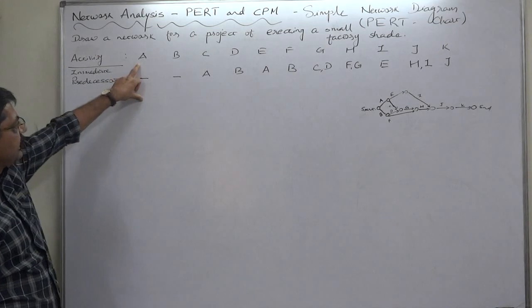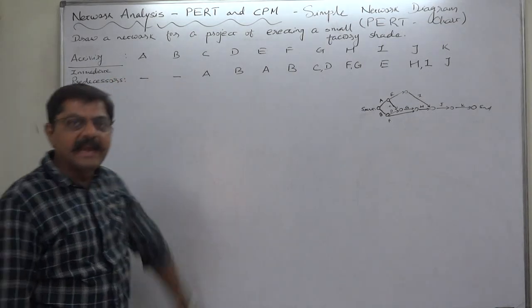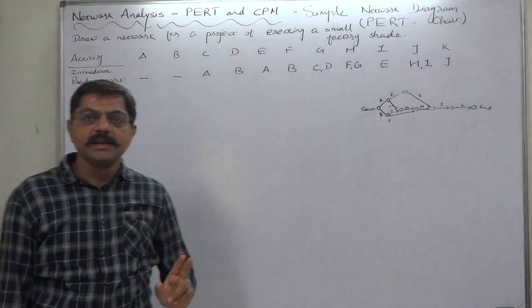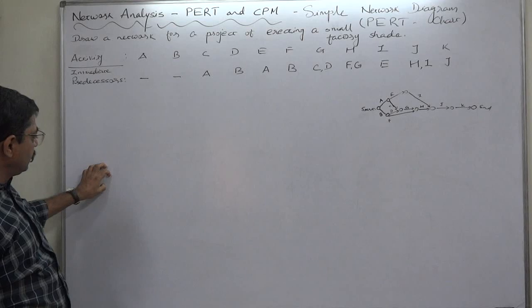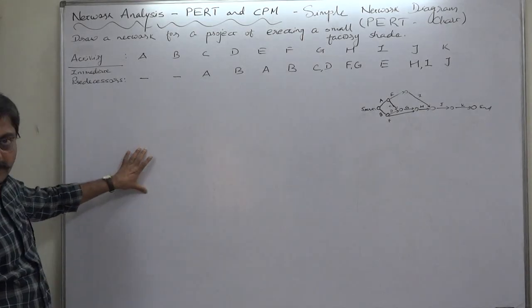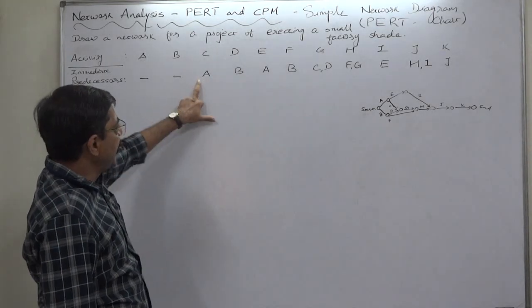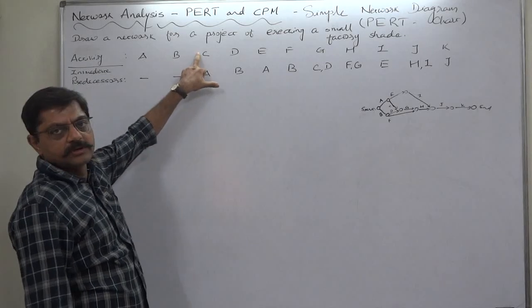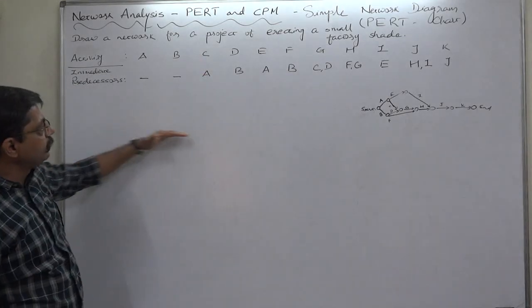Immediate predecessors: A has no predecessor, B has no predecessor. That means A and B both are initial activities—the start event is a burst event from where A as well as B both start. C follows A, meaning A is predecessor of C.